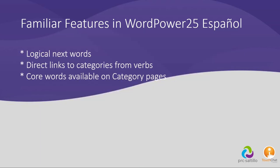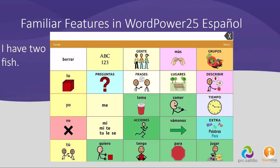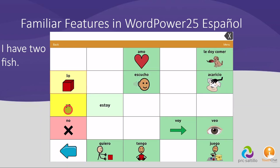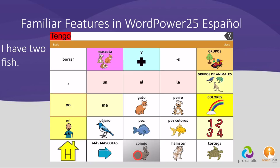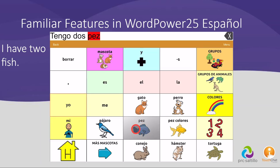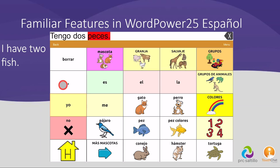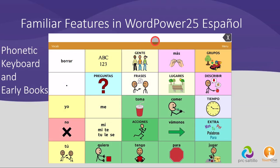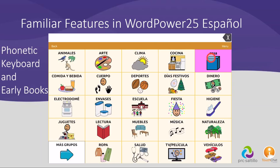The inclusion of core words on category pages, often in the same location. For example, in a nutrition category: tengo — dos — peces — tengo dos peces. And literacy supports: cómo — tengo dos peces.